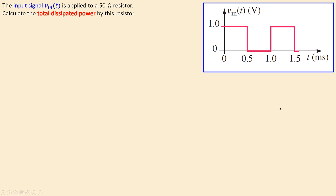As we did in the previous videos, we will use the Fourier series representation of our input signal and then calculate what the power dissipation is for each component. We will then use linear combination to calculate the total dissipated power for this situation.